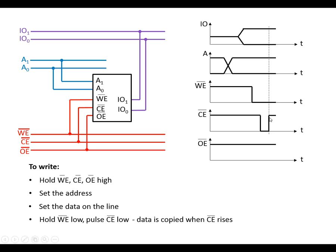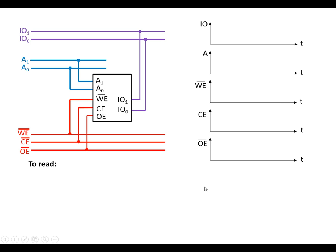When one of those control lines returns high, that's when the data is stored. Then return all control lines back high again. So the write sequence is: ensure all control lines are high, set the address, set the data, hold either write enable or chip enable low, then pulse the other one low.